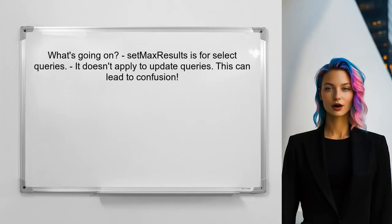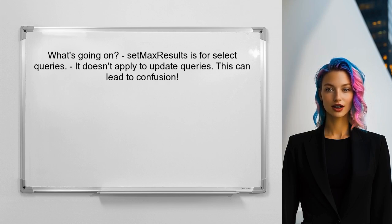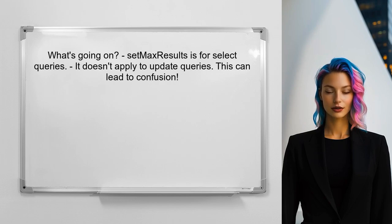So, what's going on here? In Doctrine ORM, the setMaxResults method is typically used for select queries, and unfortunately it doesn't apply to update queries. This can lead to confusion and frustration when you're trying to limit the number of records updated.